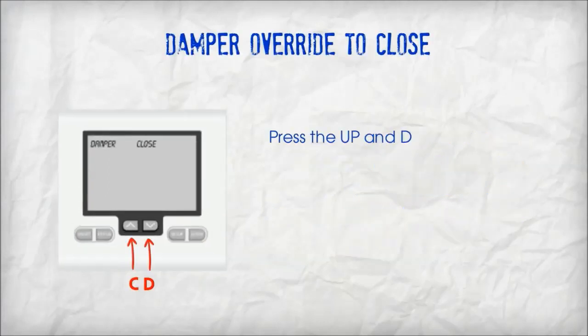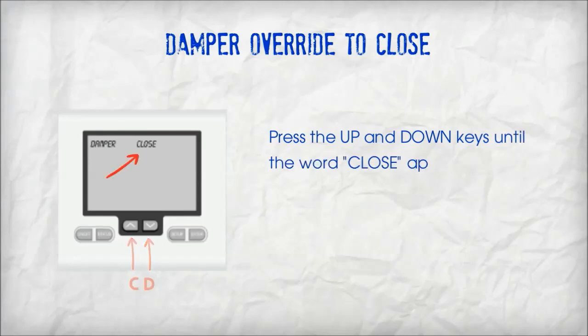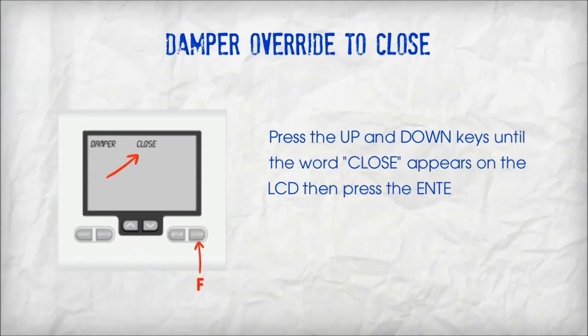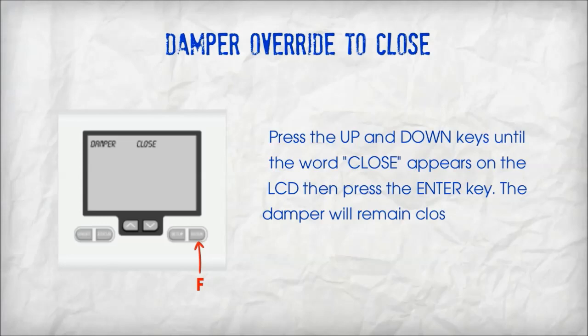Override to close. Press the up and down keys until the word 'close' appears on the LCD, then press the enter key. The damper will remain closed until the override is cancelled.